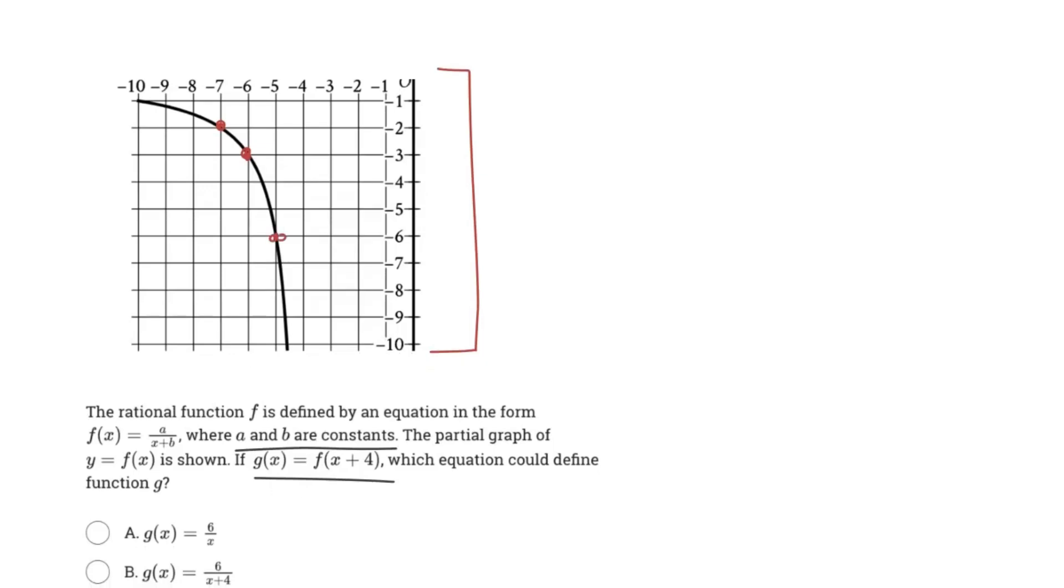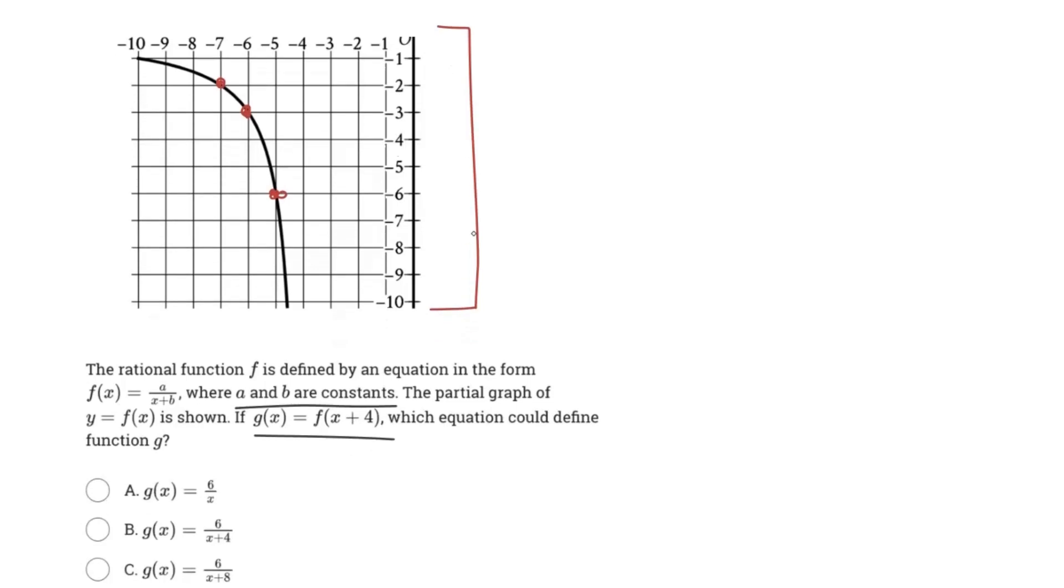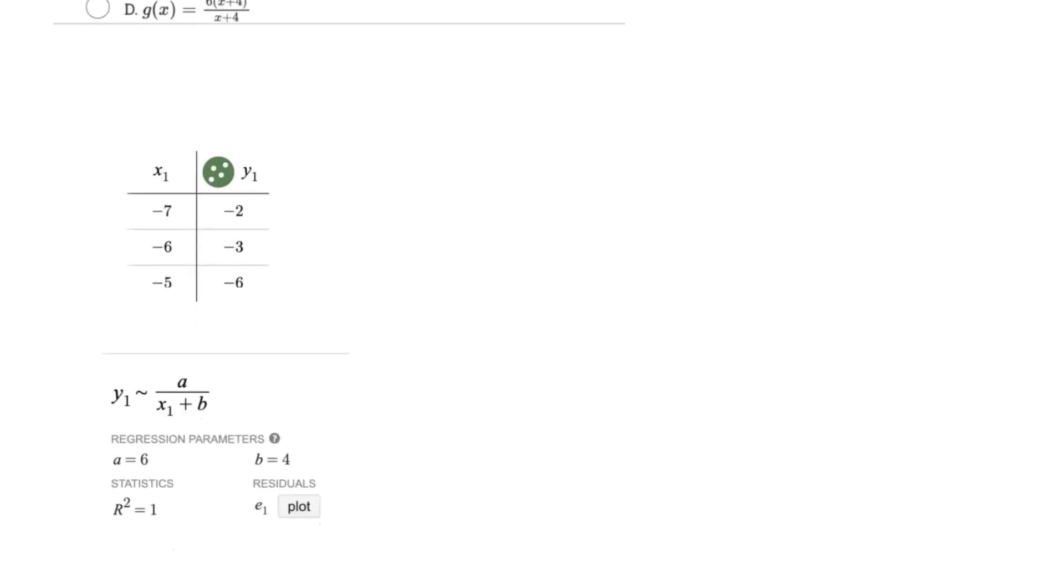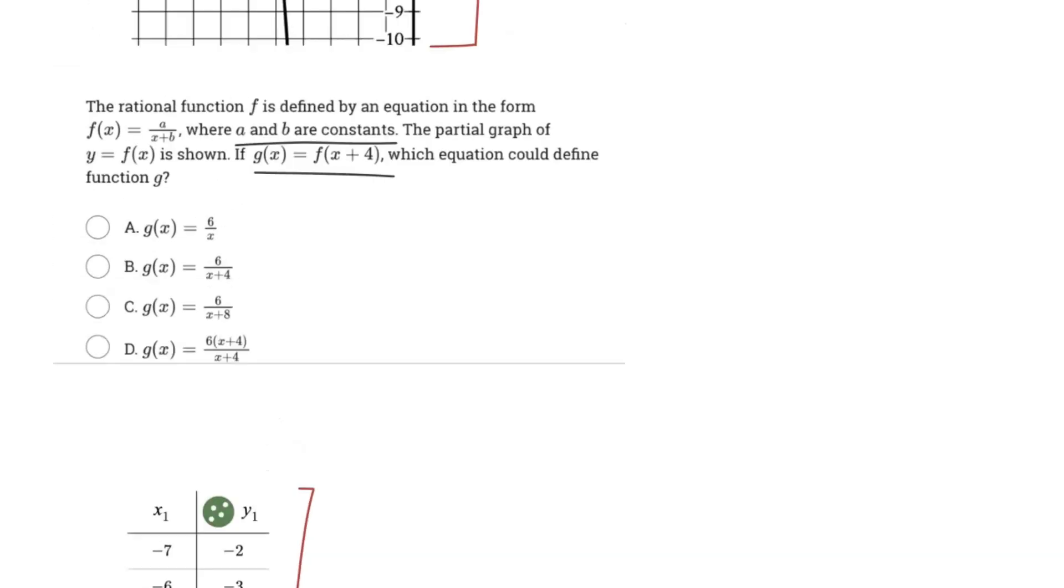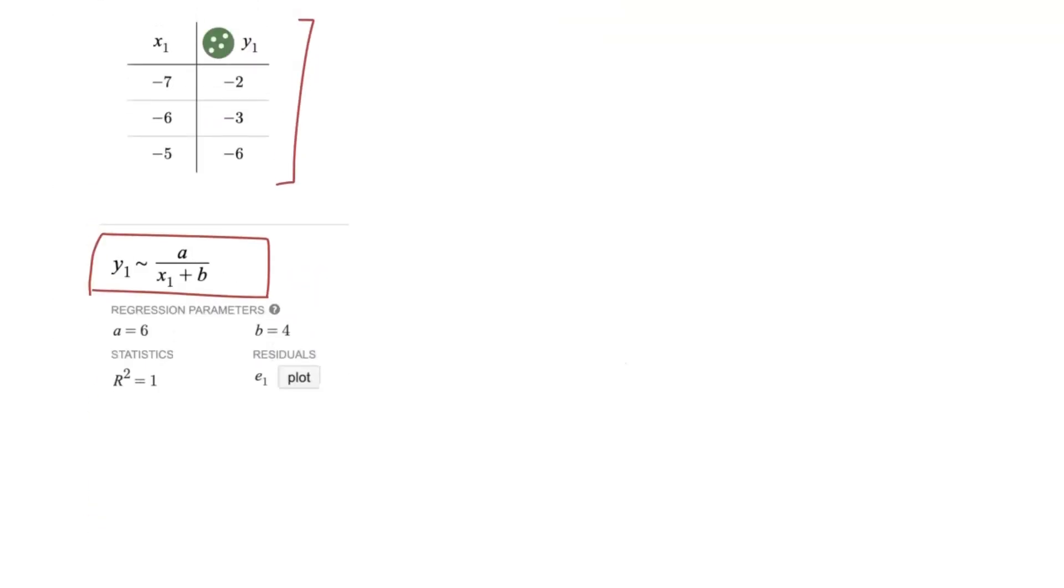We got our three coordinate points, and what you're going to want to do now is use a regression using Desmos. As you can see below, you basically insert a table with those coordinate points, and then set your regression y₁ to what we had: a/(x+b).